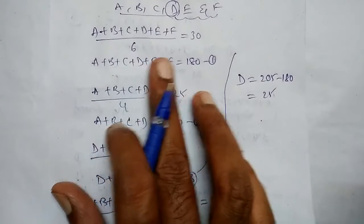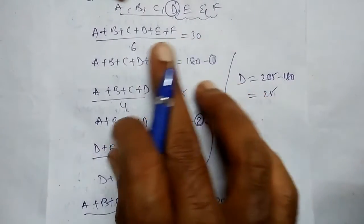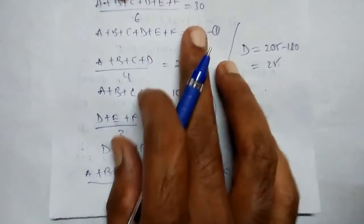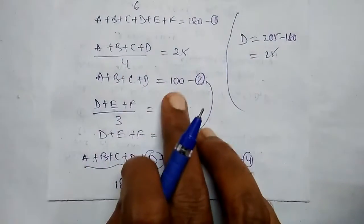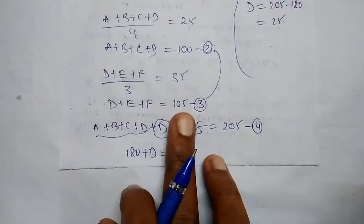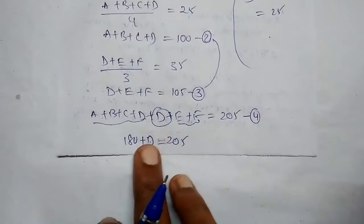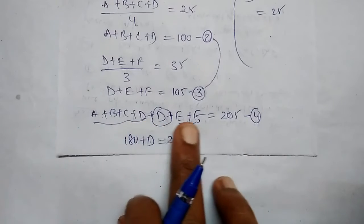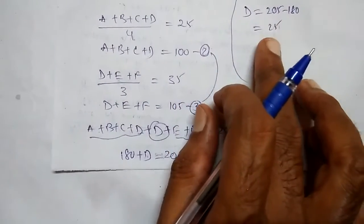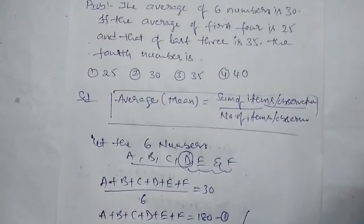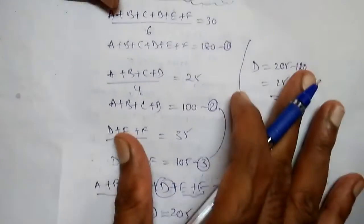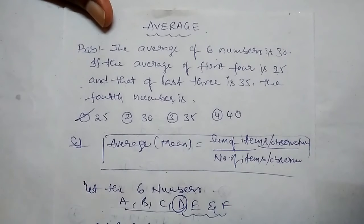So the six numbers average is 30, giving a total of 180. The first four total is 100, and the last three total is 105. Adding them and the fourth number D appears twice, so 180 plus D equals 205, and D equals 25. This is the answer — the first option. This is the topic-wise playlist. Thank you. This is Suresh.